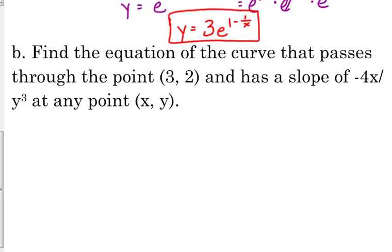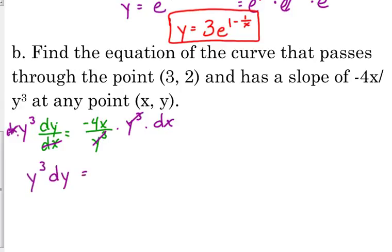This curve goes through the point (3, 2) and has a slope of negative 4x over y cubed. Slope dy over dx equals negative 4x over y cubed. This one's going to look a little different. I can tell already because of where my x's and y's are. Multiply both sides by y cubed, multiply by dx.